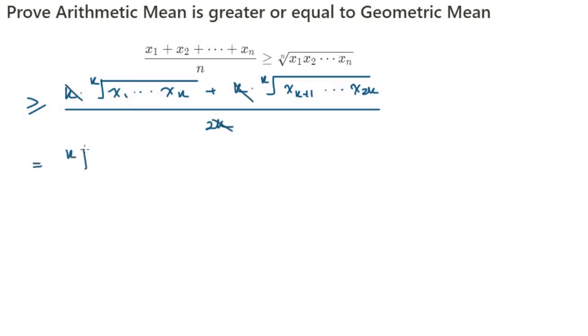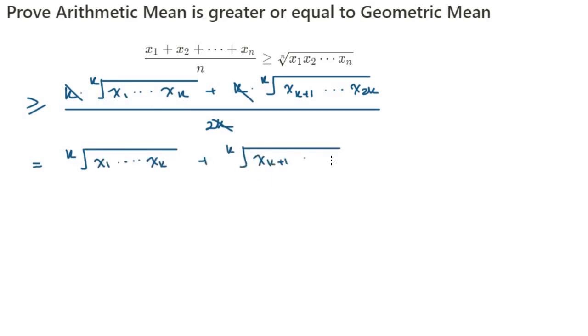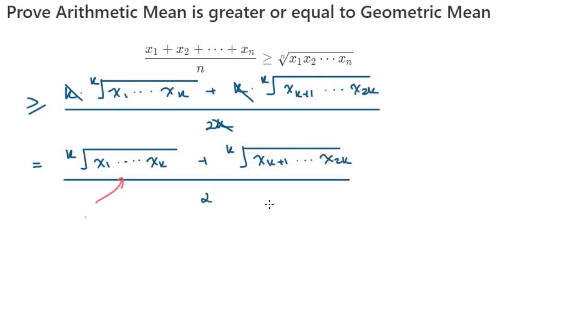Cancelling out the k's, we get [ᵏ√(x₁x₂⋯xₖ) + ᵏ√(xₖ₊₁xₖ₊₂⋯x₂ₖ)] / 2.